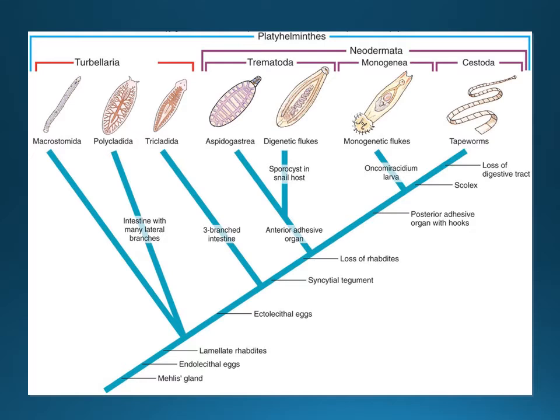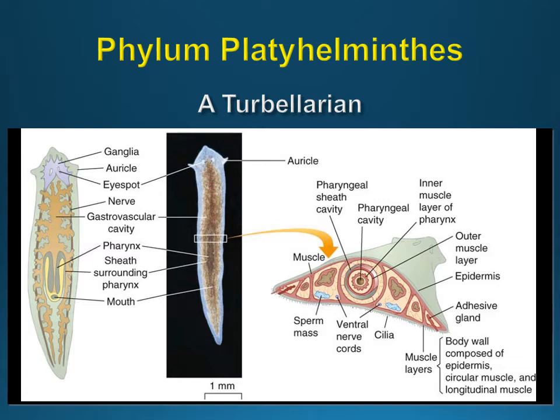Let's look at the groups of Platyhelminthes. The turbellarians - the first group - are the ones you normally think of as the common flatworm. They're very cute with these little eye spots. They can't see that well but they can pick up on light and they usually like to live in dark spots. They also have the gastrovascular cavity where they feed, and they have a pharynx and a mouth. Sometimes you can see the proboscis coming out and sucking in food - it's pretty cool.